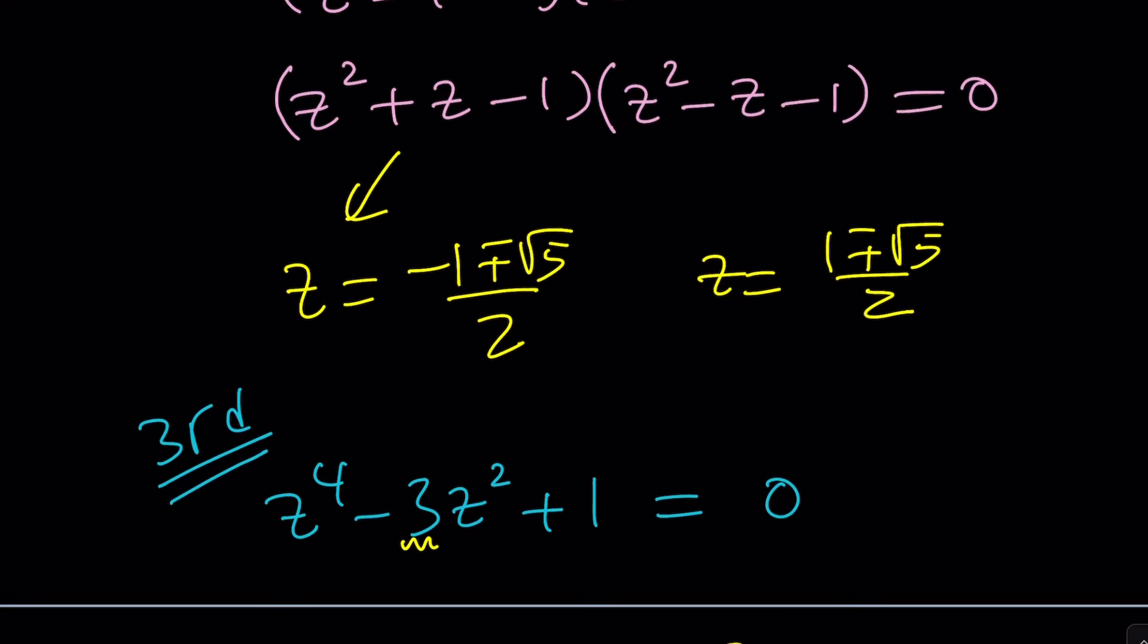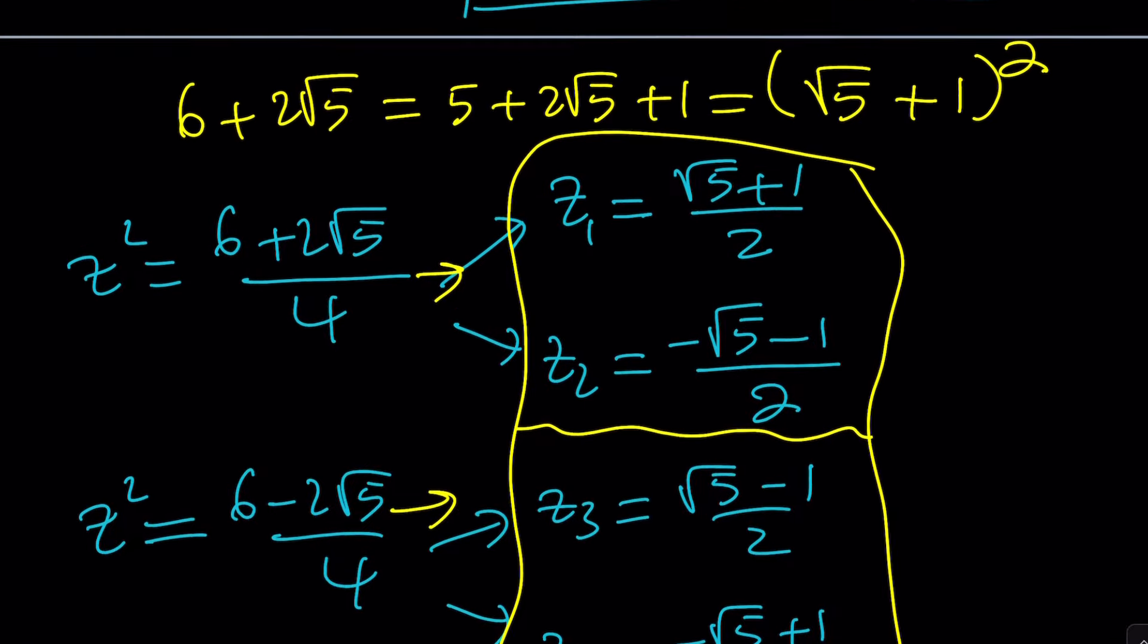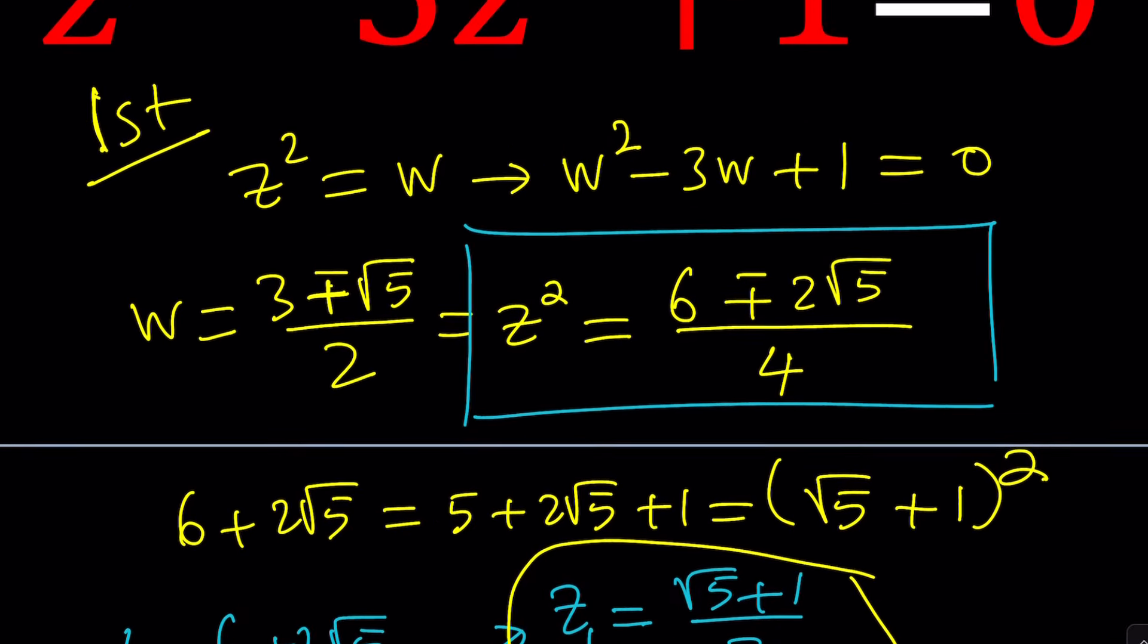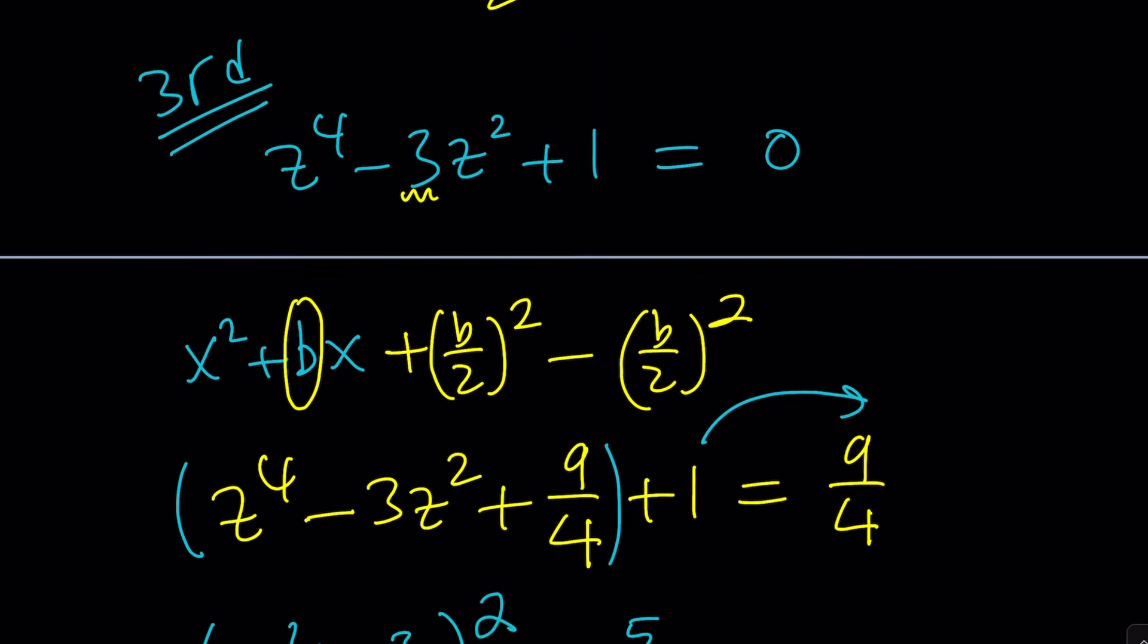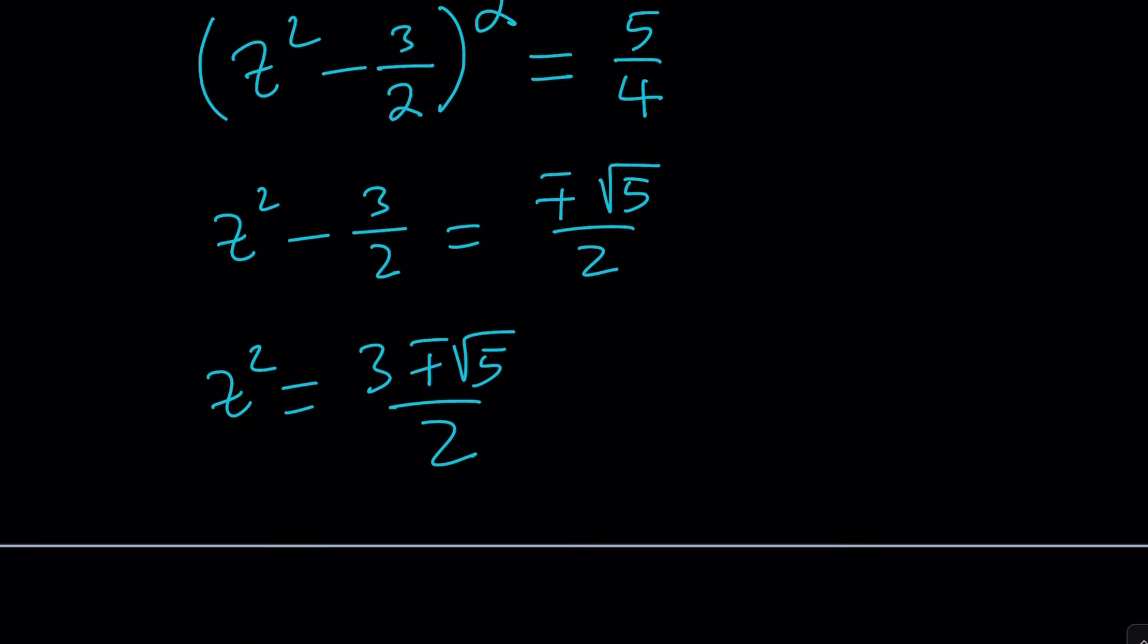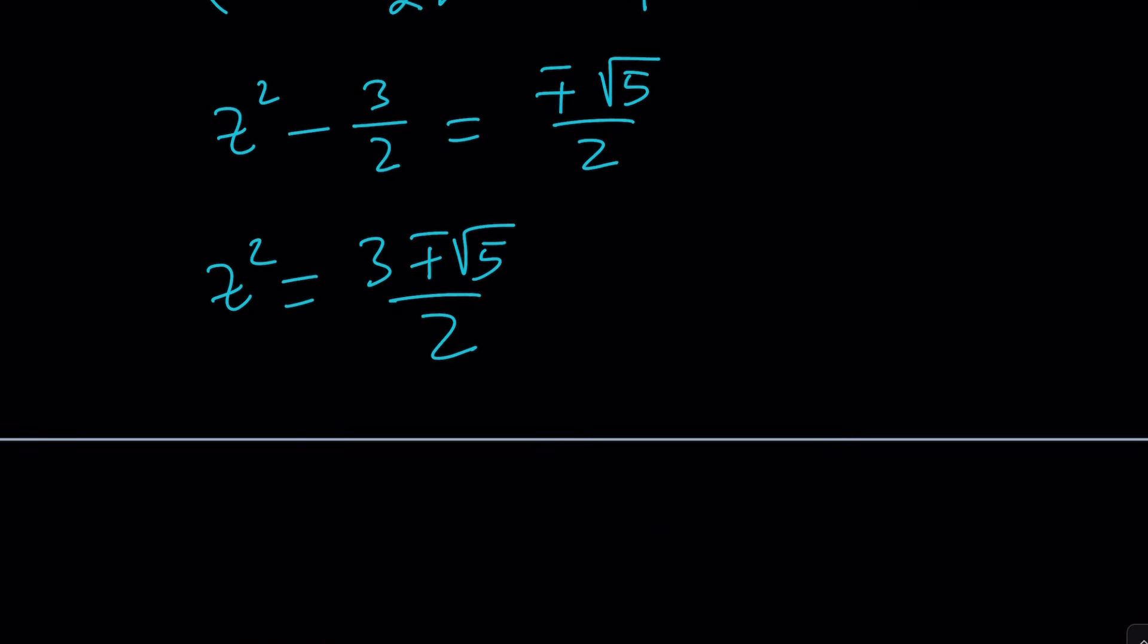Now does that look like the first method? Yes it does, because we got the same value but using a different method. And from here, same idea, you're going to get the same z values: z equals negative 1 plus minus root 5 over 2, and 1 plus minus root 5 over 2.